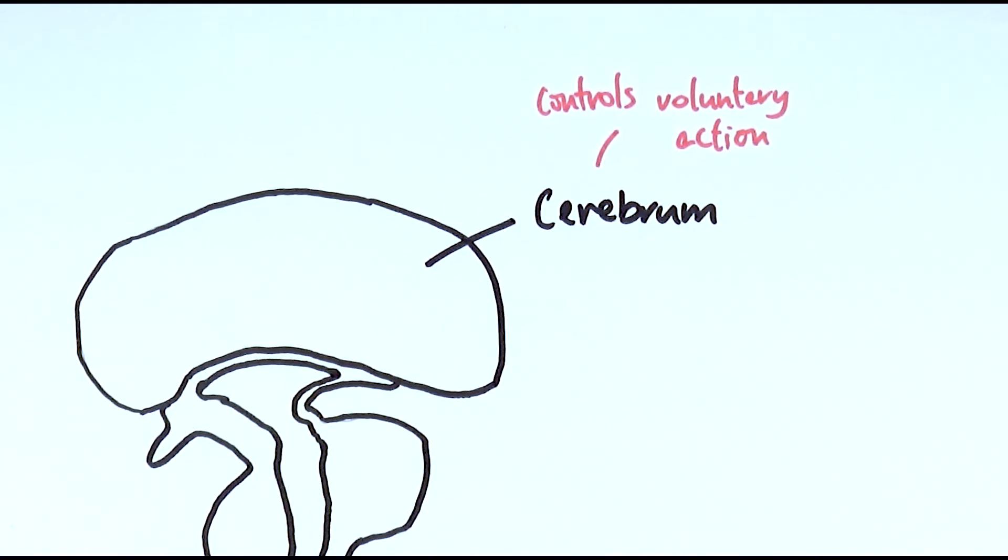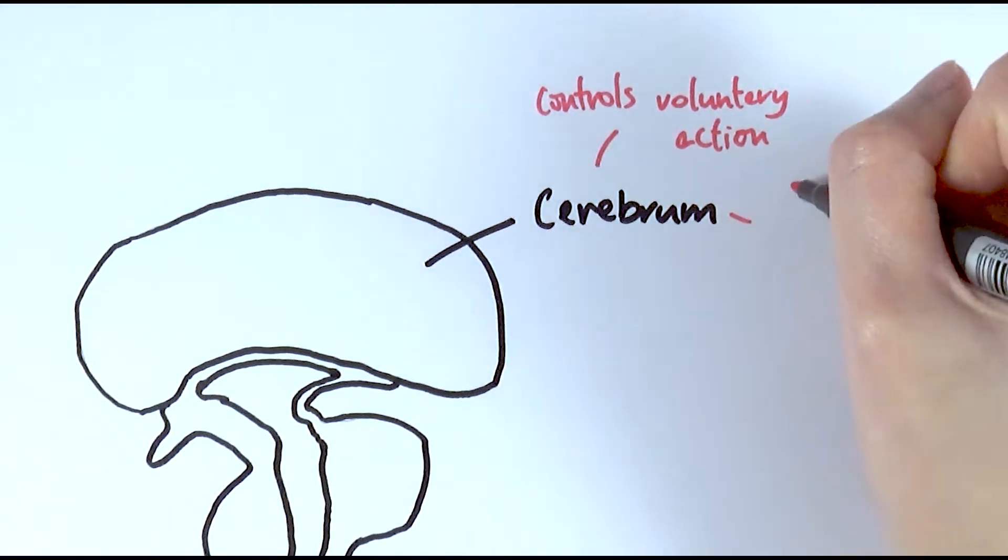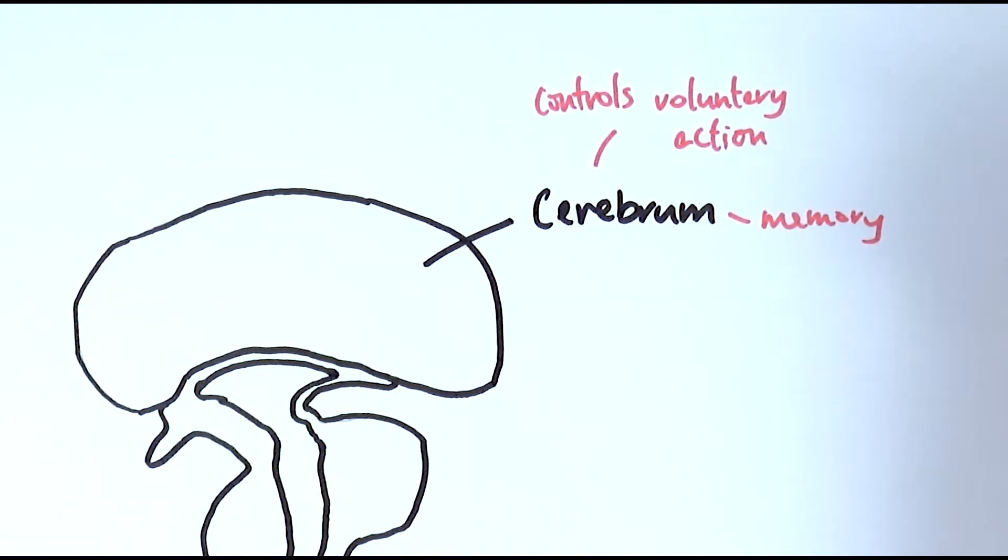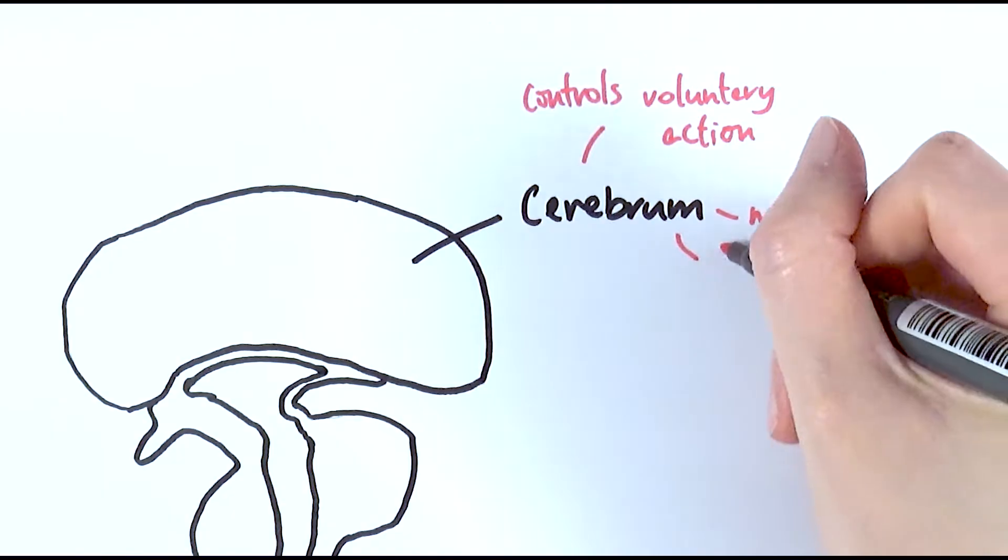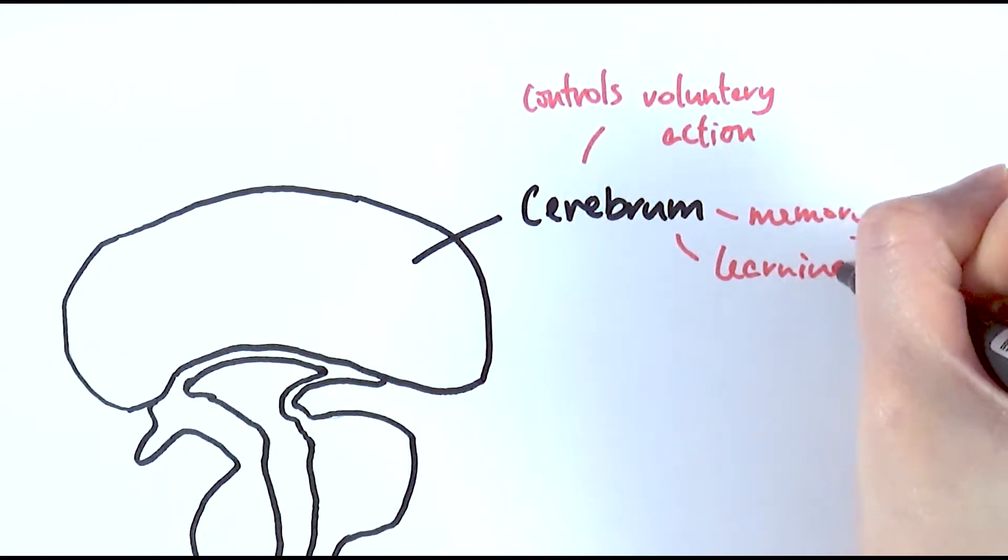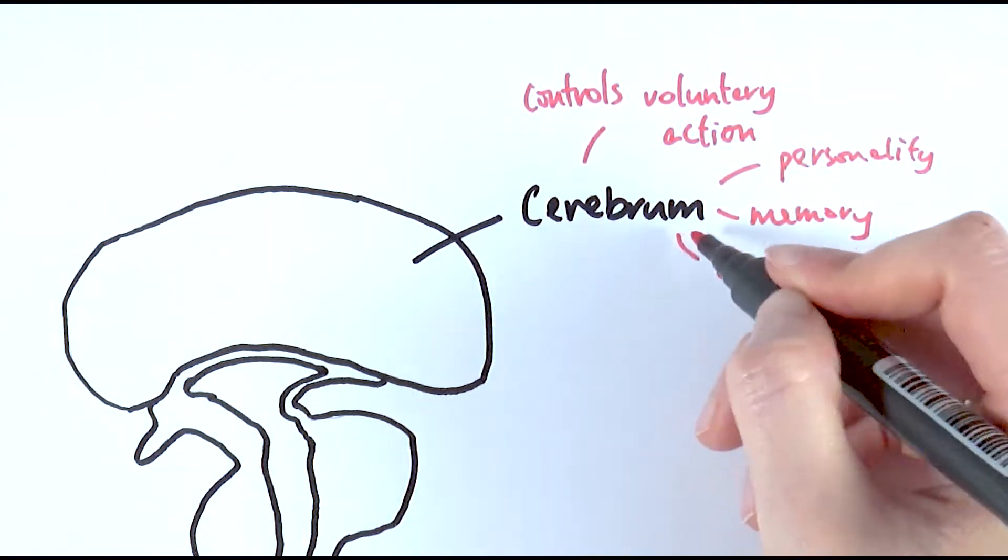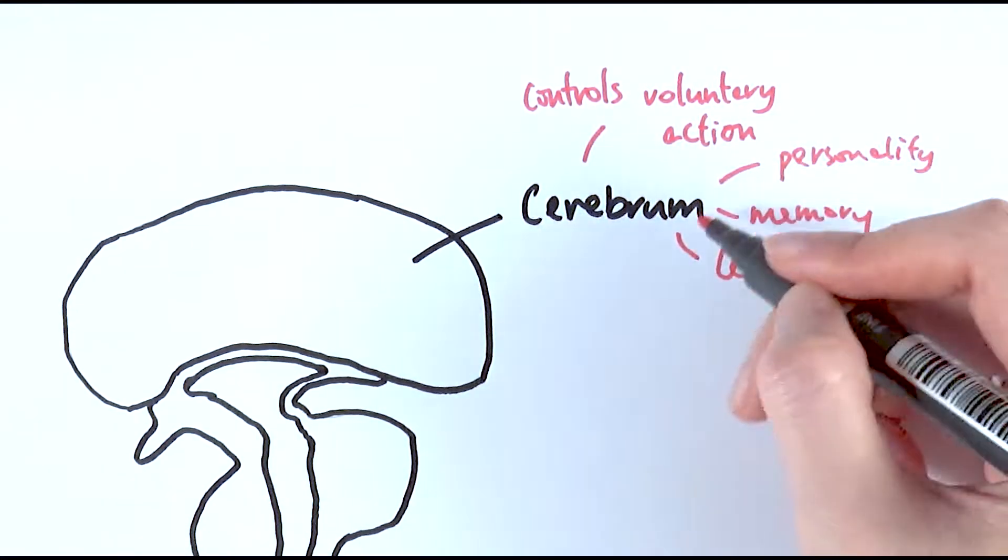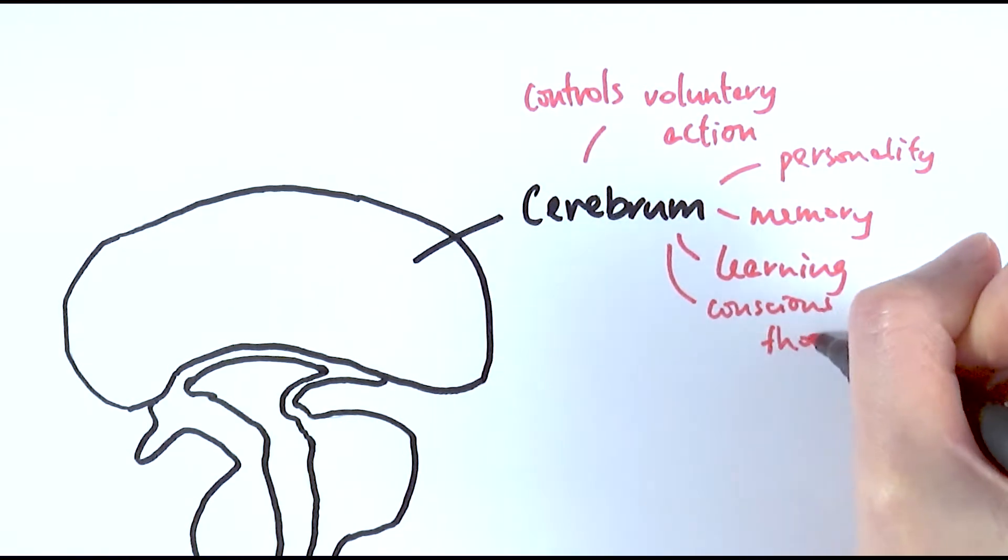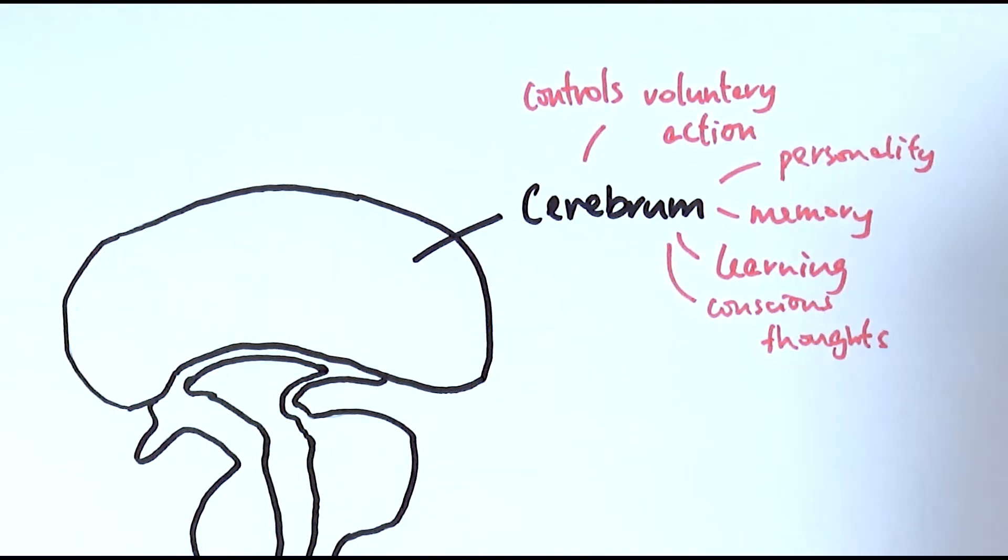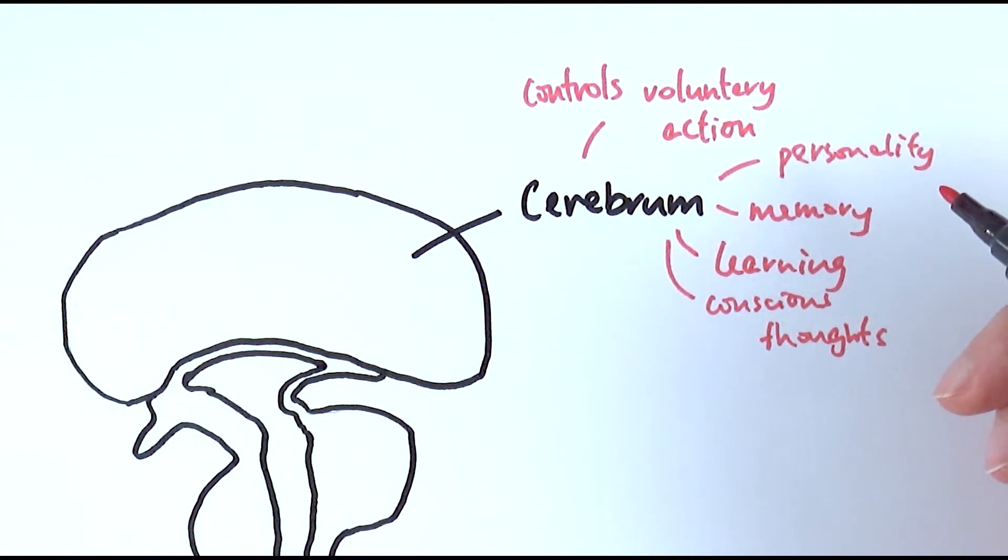So the cerebrum can actually have multiple functions, but one of the key ones is that it controls our voluntary actions or our consciousness. Other things it could also control would be things like memory. So the fact that we can remember stuff is because of the cerebrum. It also controls our learning abilities. Personality is actually another key one. And conscious thoughts would be also voluntary actions. So the fact that you want to eat something or if you want to go play a game, all of those conscious thoughts are controlled by the cerebrum.